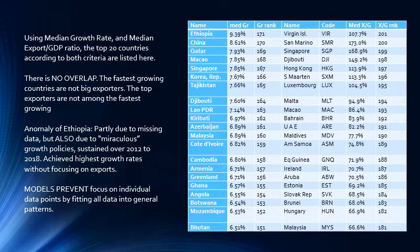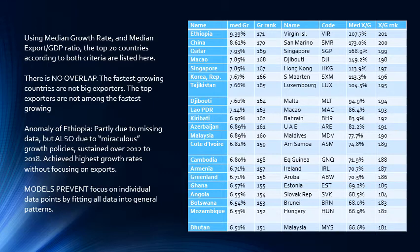We can use this one number to rank all countries according to their median growth over 59 years. The top 20 countries are shown. Ethiopia is the absolute top with a median growth rate of 9.39%, meaning half of the years it had higher growth and half had lower. China has the second highest at 8.62%, meaning for 30 years it had more than that and for 30 years less. There are a total of 171 countries for which we have growth data, so Ethiopia has rank 171 and China has rank 170.